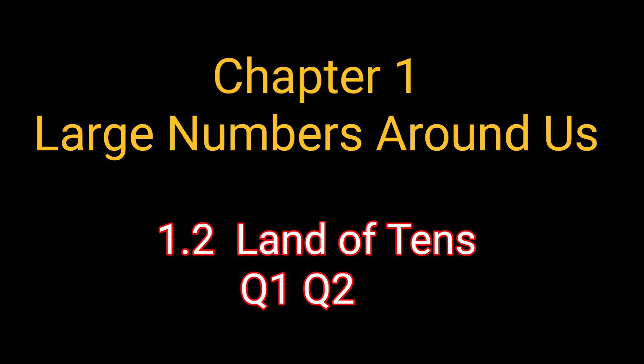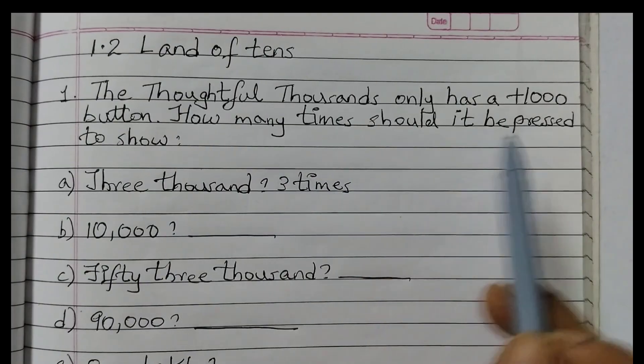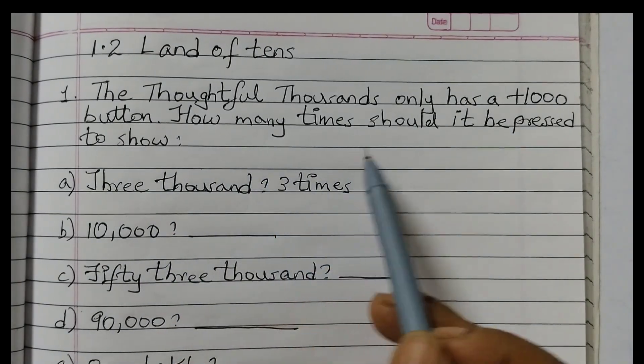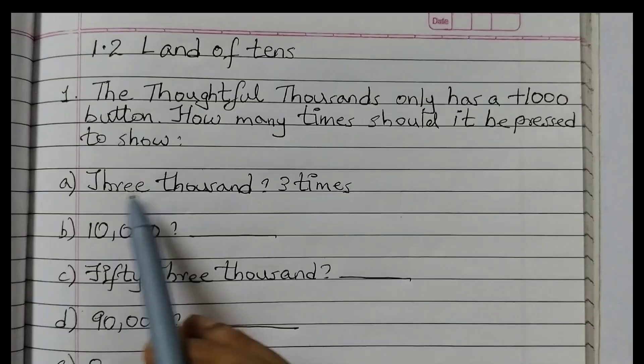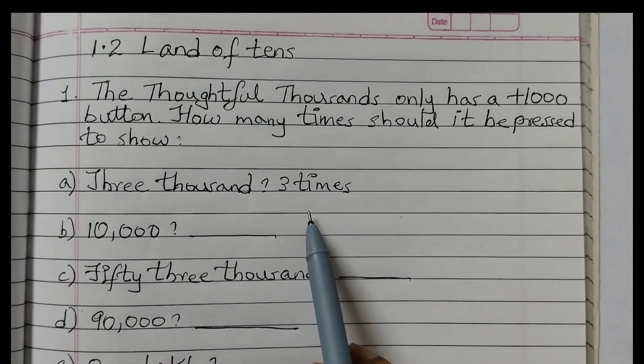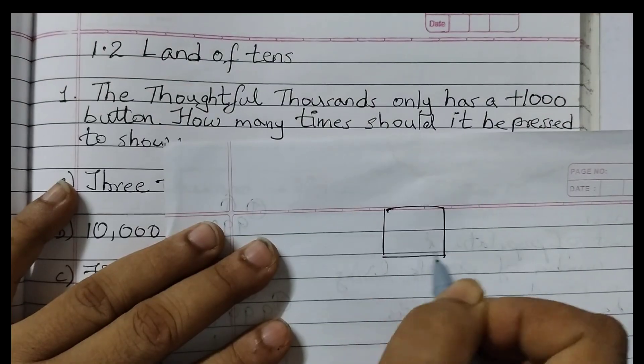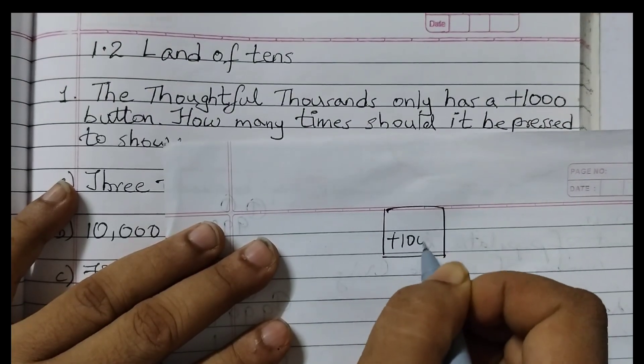This is for class 7 students. The first problem: Thousands only has a plus 1000 button. How many times should it be pressed to show 3000? The answer given is 3 times. So how do we get this? There is a special calculator.